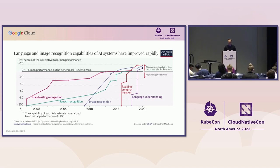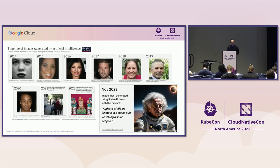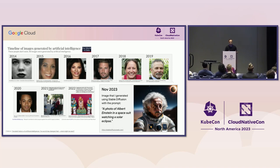Generative AI — gen AI — as most of you would know, is a type of artificial intelligence that can produce new images, text, videos, and audio clips. The generative capabilities of AI have seen a stark improvement over the last nine years. This chronology shows pictures generated by AI — none of these people actually exist. We can see the evolution from a pixelated black-and-white image from 2014 to a very realistic image by 2017.